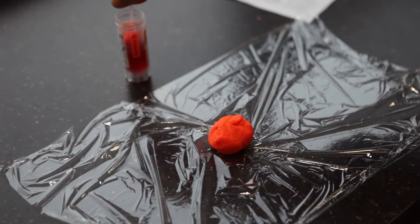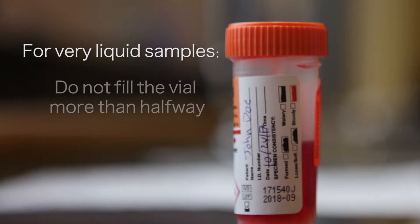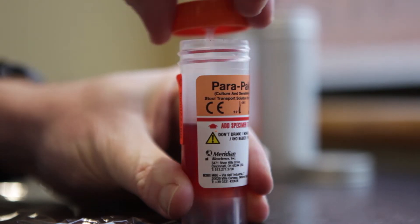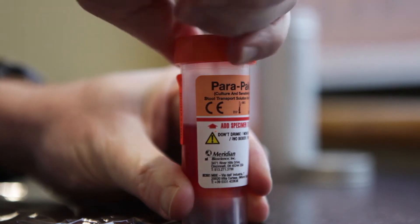For very liquid samples, don't fill the vial more than halfway or overfill it. Use the spork to mix the sample with the red liquid in the vial. Then screw the cap on tightly.